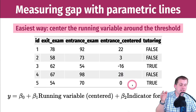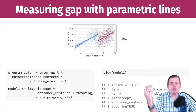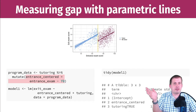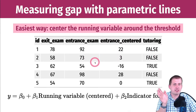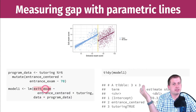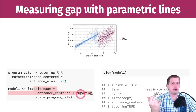All you need for the regression model is the centered running variable and an indicator variable marking whether they received treatment. In R, you take the tutoring dataset, create a column called entrance_centered by subtracting 70 from the entrance exam column, then run a regression: exit exam explained by entrance_centered plus tutoring — whether or not they used the tutoring program.